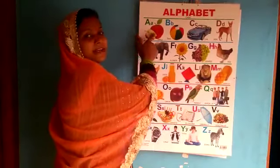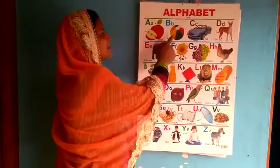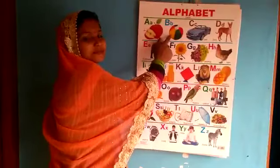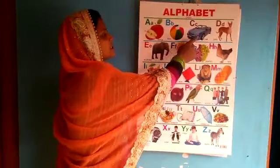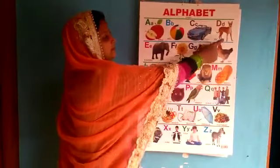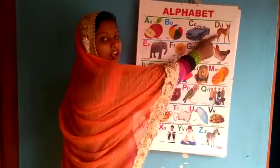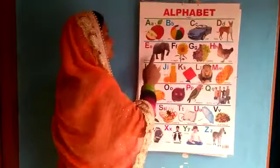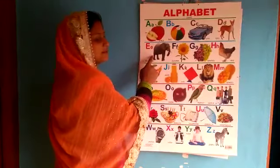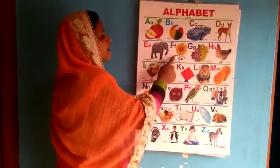A for apple, B for ball, C for car, D for dog, E for elephant.